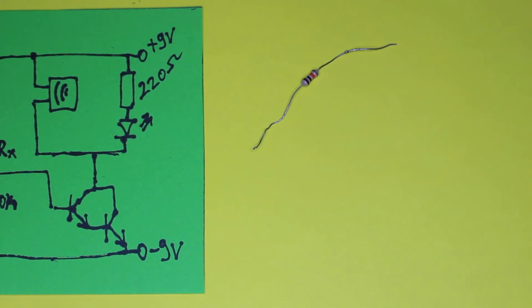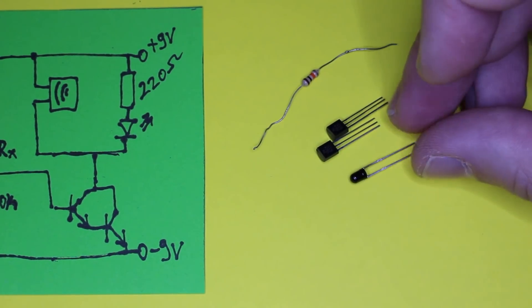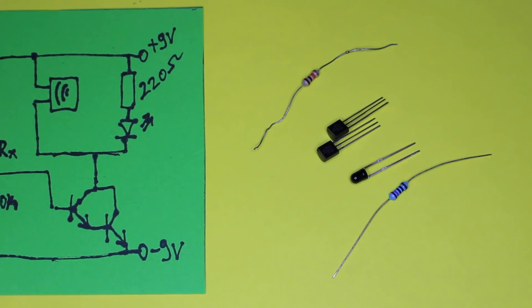Components include NPN transistors, LED, a buzzer, receiver diode, and three resistors.